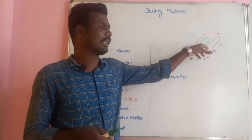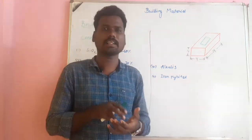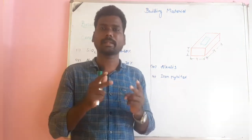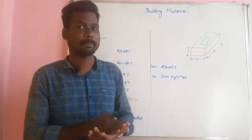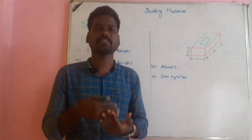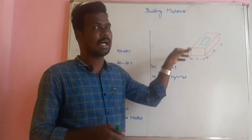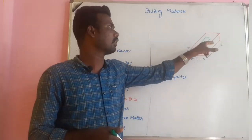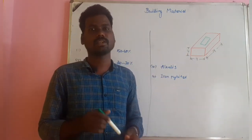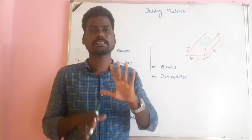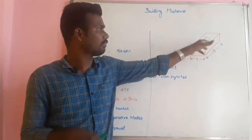Now we will look at the frog. The frog is an indentation on the top surface of a brick. The frog has two purposes: it helps create a good mortar joint and acts as a binding element. It also carries the manufacturer's name. The frog size is 10cm × 4cm × 1cm.